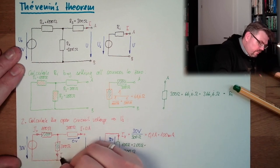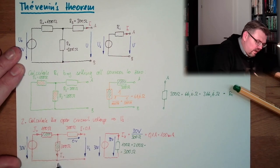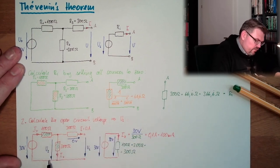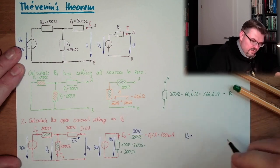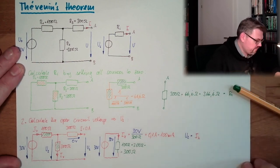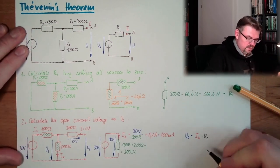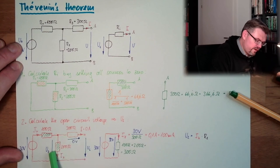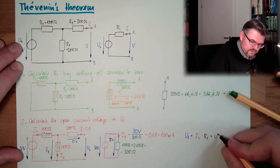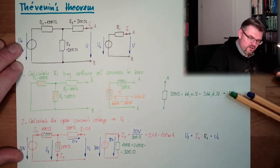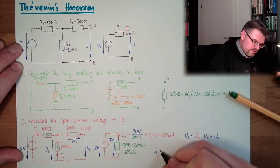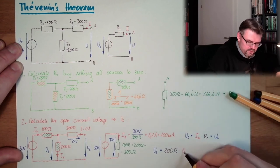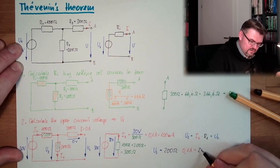Ix is here, and here as well, because nothing is going out, so Ix must pass down here. Looking at U2: U2 equals Ix multiplied by R2. And from the loop: U2 = US. So US = R2 × 0.1 A = 200 ohms × 0.1 amps = 20 volts.